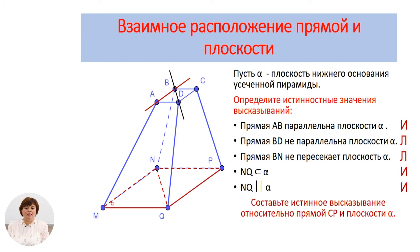Составьте истинное высказывание относительно прямой ЦП и плоскости α. Прямая ЦП совпадает с боковой гранью ЦП и, соответственно, пересекает плоскость α в точке ЦП. То есть истинное высказывание будет звучать так: прямая ЦП пересекает плоскость α.